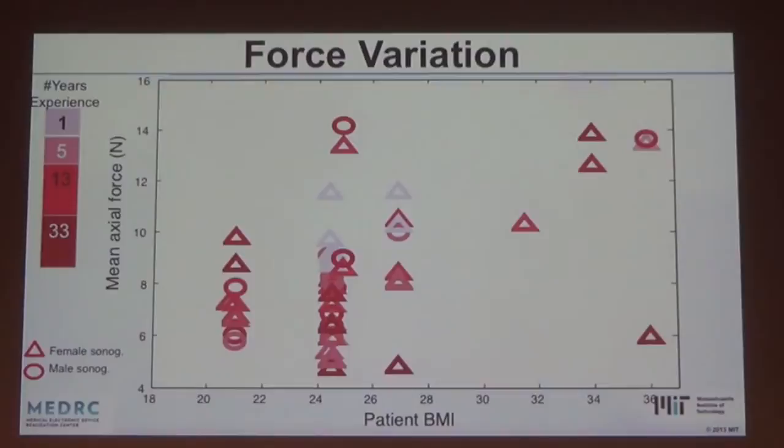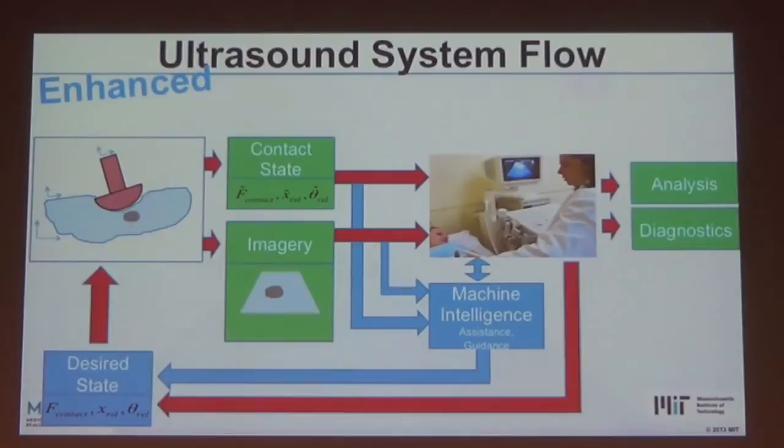What we're trying to do is think about this overall system flow and find ways to intervene. How do we actively control the contact state? If we can't control it, how do we measure it? How do we provide guidance to the sonographer and the probe so we can have more quantified acquisition states and ultimately get better quantified information out of the ultrasound imagery?